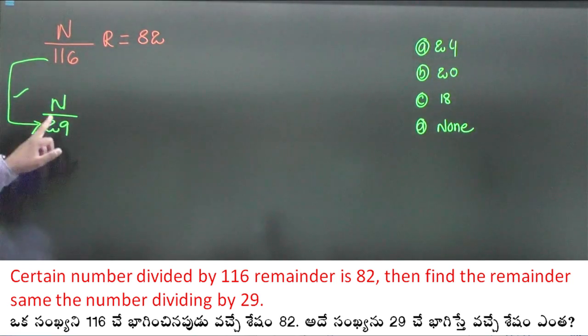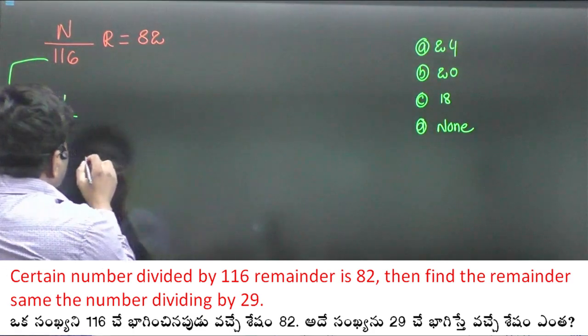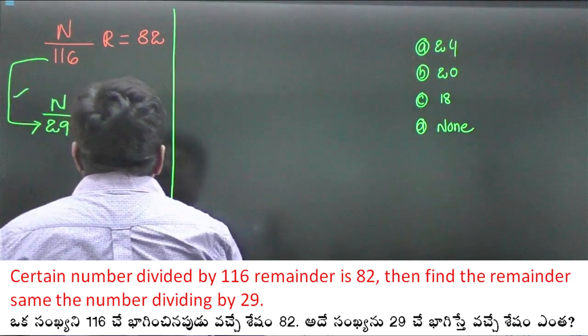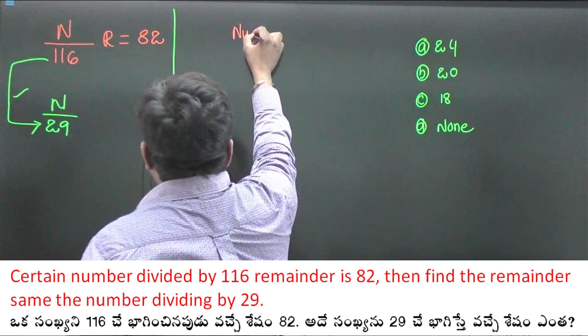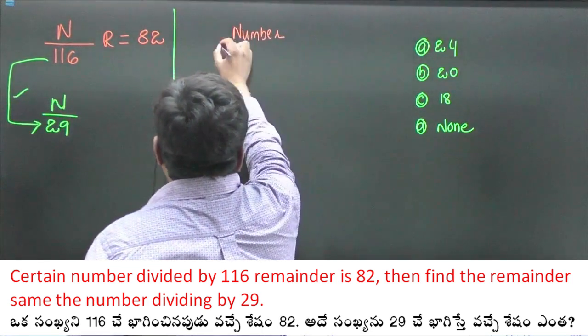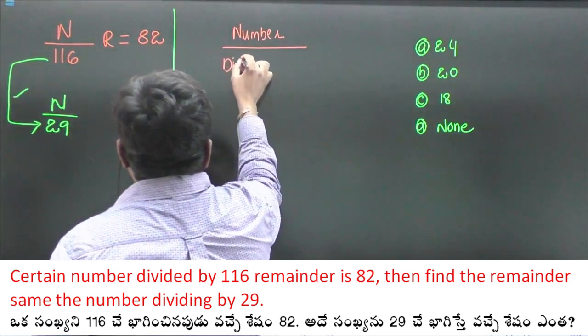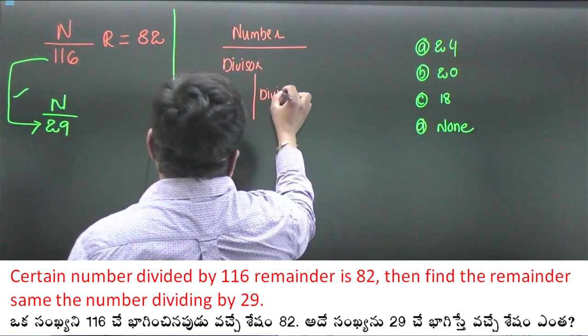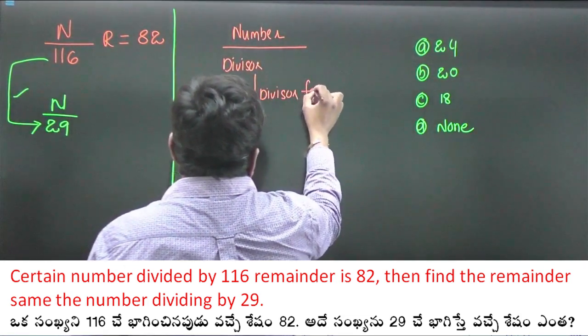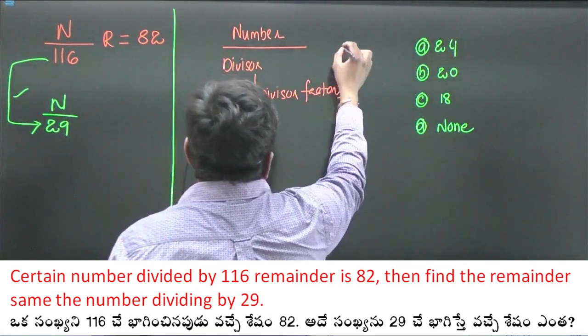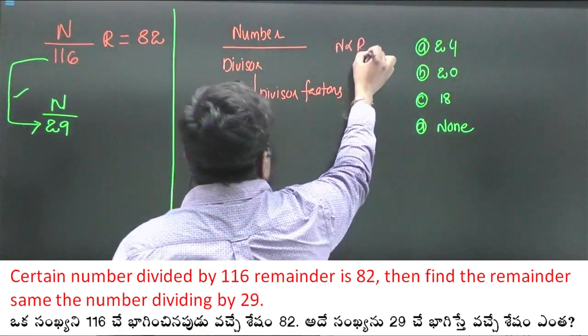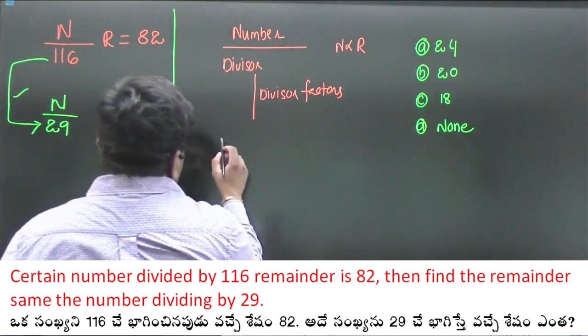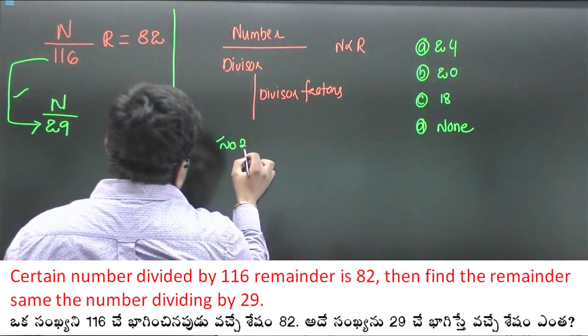So 2940 is 116. We have to know that we are going to discuss. In this concept, number divided by divisor factors. Divisor factors can count. Number remainder is a proportion. Directly proportion is a proportion.